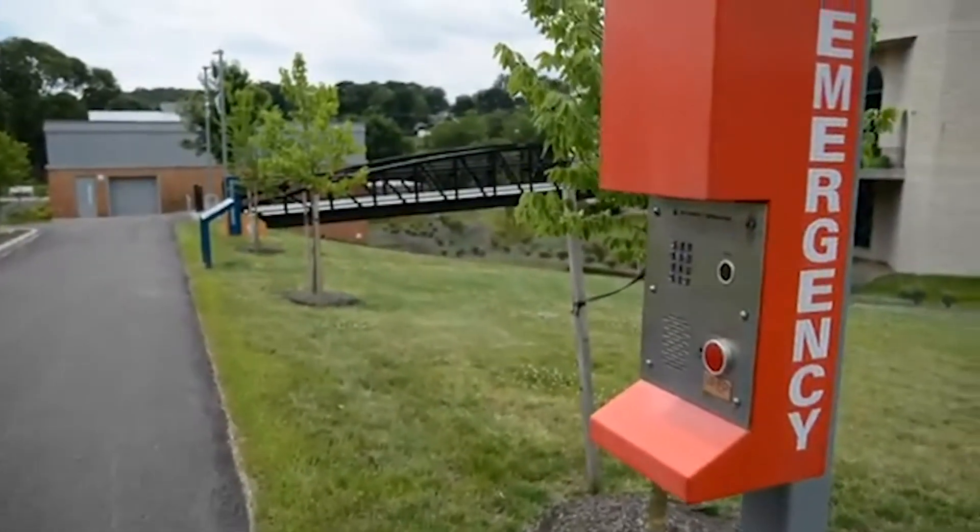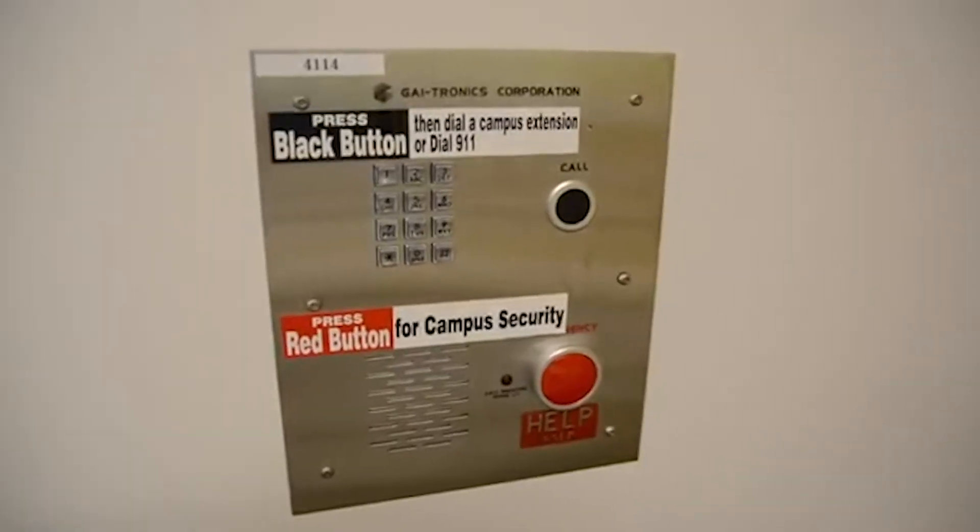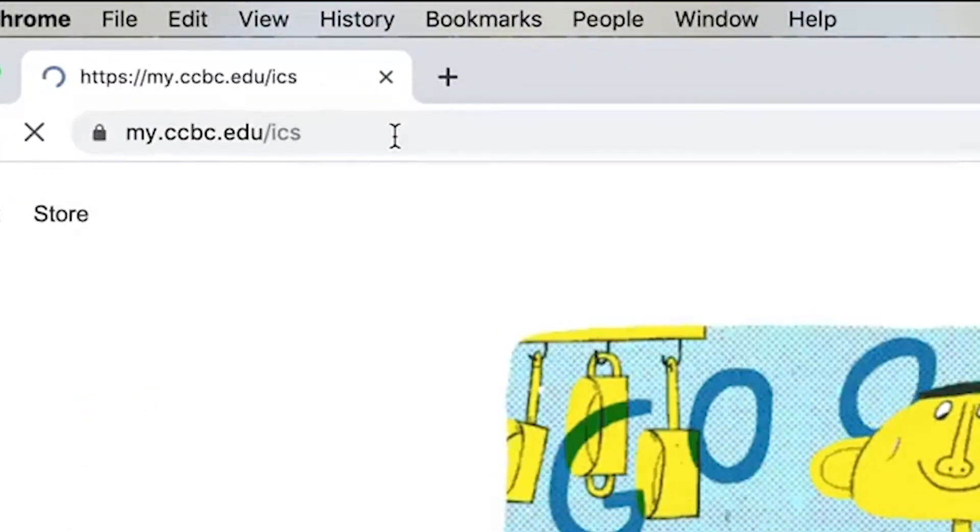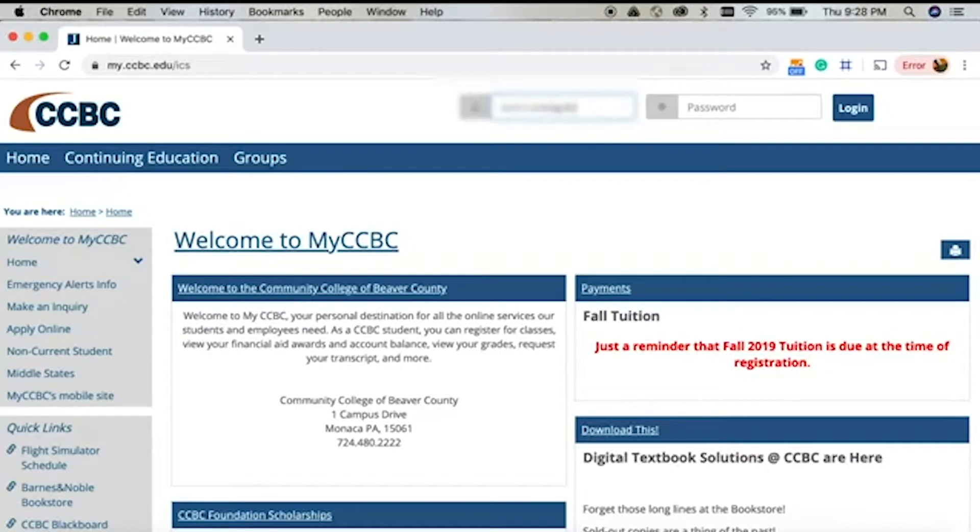The college has ten emergency phones located throughout campus. In addition, each classroom is equipped with an emergency intercom alert system. The college uses an emergency notification system called RAVE in case there is an emergency on campus.